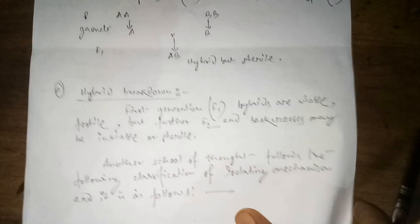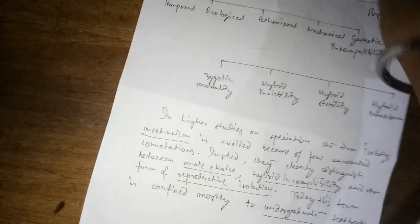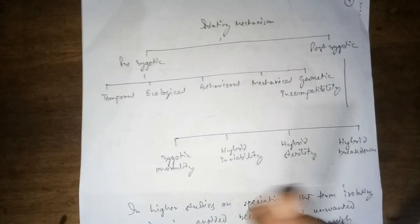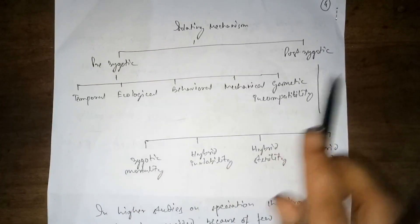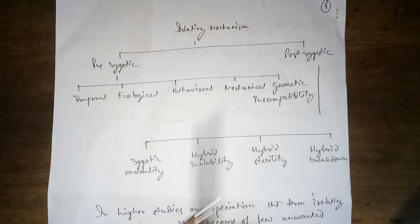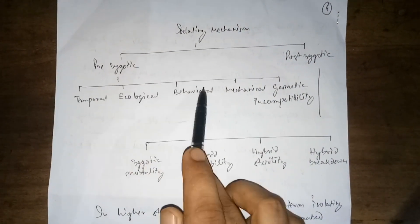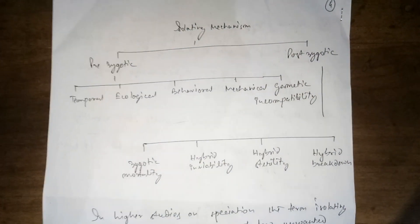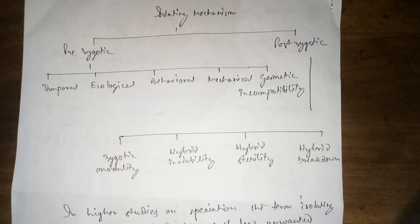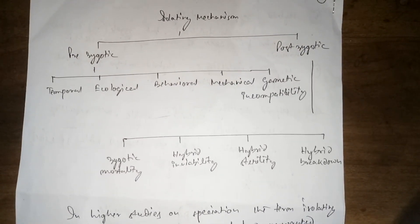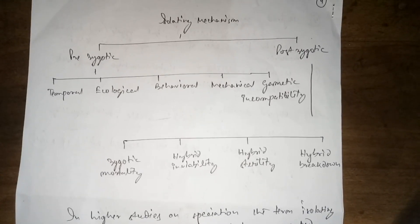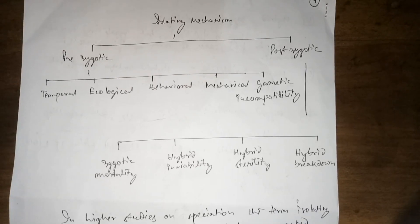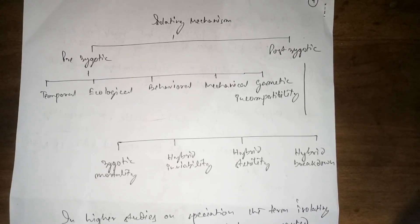Another school of thought follows an alternative classification of isolating mechanisms, divided into two groups: prezygotic and postzygotic. Under prezygotic there are five subdivided groups: temporal, ecological, behavioral, mechanical, and gametic incompatibility. Under postzygotic there are four: zygotic mortality, hybrid inviability, hybrid sterility, and hybrid breakdown.